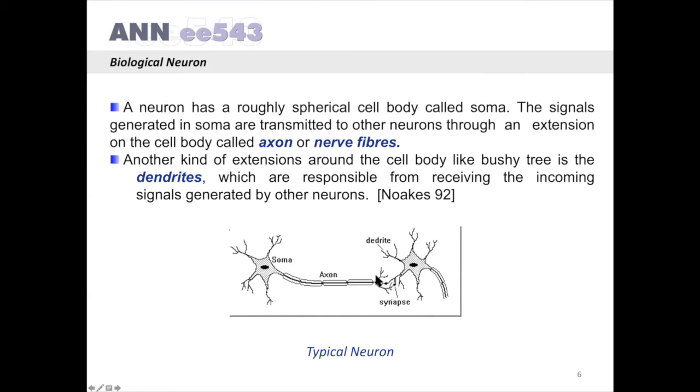Another kind of extension around the cell body is the dendrites, which are responsible for receiving the incoming signals generated by other neurons. These extensions are called dendrites.